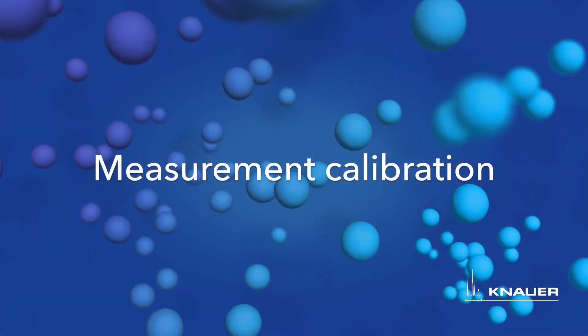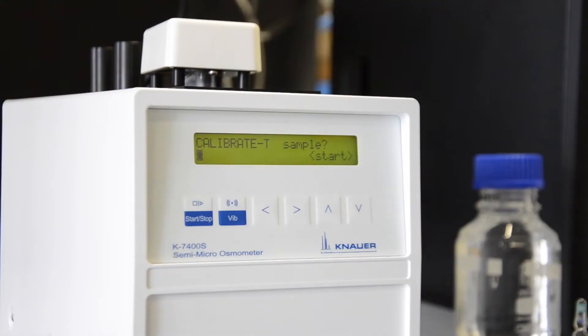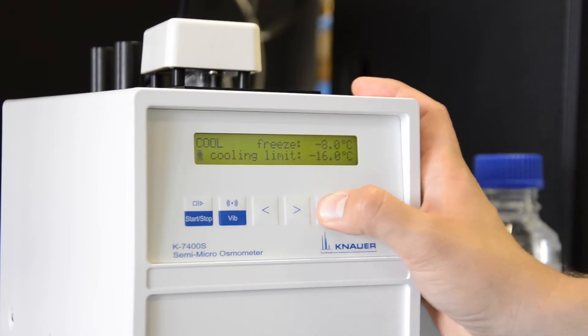Now that the calibration of the thermistor is done you can proceed with the normal calibration which is needed for your measurements. Go to the calibrate menu using the up and down buttons.